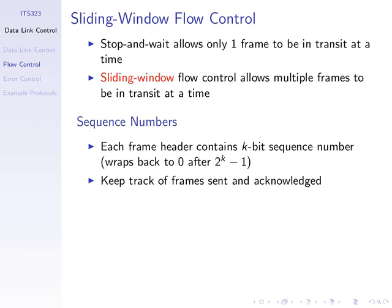Sliding window flow control: stop-and-wait is one general mechanism — send one data frame, stop and wait for the ACK, send the next one, stop and wait, and so on. Sliding window allows multiple frames to be in transit at a time. Send three frames, stop and wait for an ACK, send another three frames. Stop-and-wait limits to one frame at a time; sliding window allows multiple frames to be transmitted before you have to wait for an ACK.